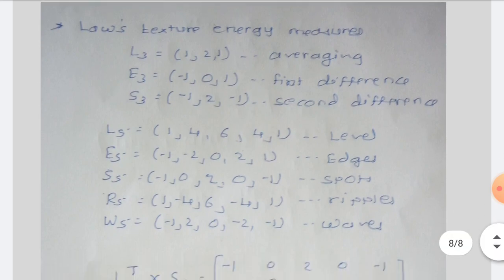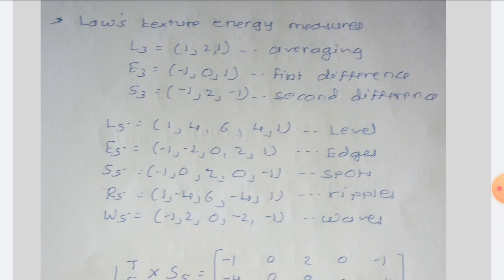The next topic is Laws texture energy measures. Laws texture energy measures determine texture properties by assessing average grey levels, edges, spots, ripples, and waves. They are derived from 3 simple vectors: L3 = [1, 1, 1] for grey level averaging; E3 = [-1, 0, 1] for first difference; and S3 = [-1, 2, -1] as a second difference. After convolution of these vectors with themselves and each other, five vectors are obtained: L5, E5, S5, R5, and W5.